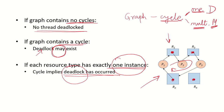If there are multiple instances of resources, a cycle does not necessarily mean deadlock. Had there been only one instance of each resource, a cycle means deadlock has occurred. This is how we can use the resource allocation graph to detect deadlocks.